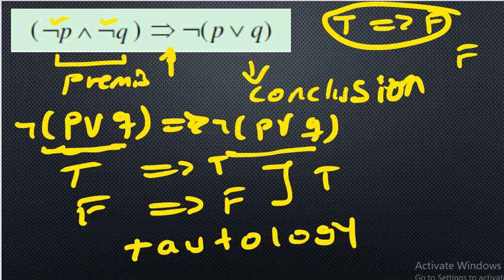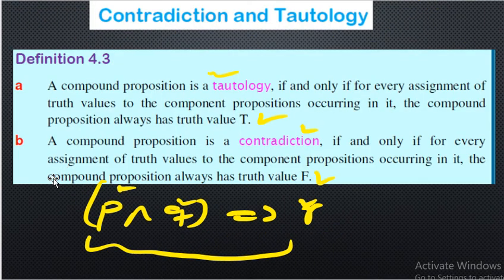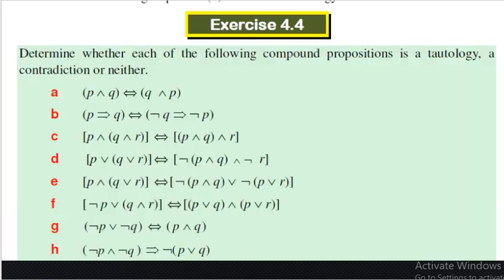These exercises explain better what contradiction and tautology mean. According to the definition: if the given compound proposition is always true for any truth values of each component proposition, it is a tautology; if always false, it is a contradiction. Thank you for watching — don't forget to subscribe, like, and comment.